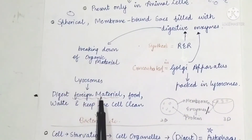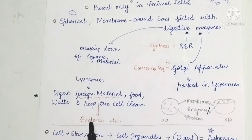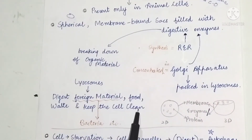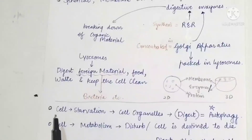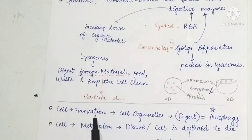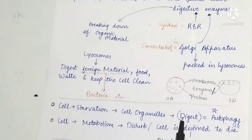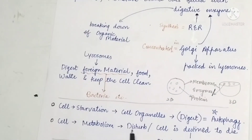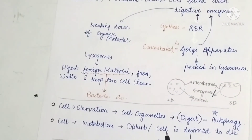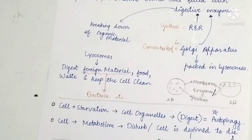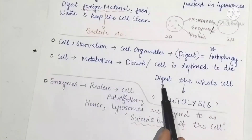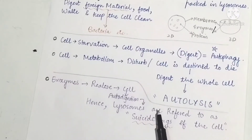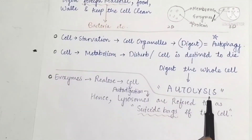These digestive enzymes help break down organic materials. Lysosomes also digest foreign materials like bacteria. When starvation occurs, lysosomes digest cell organelles — that is called autophagy. When cell metabolism is disturbed and the cell is destined to die, lysosomes digest the whole cell — that is called autolysis.